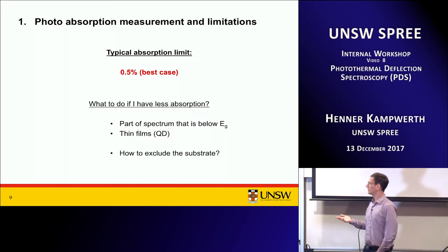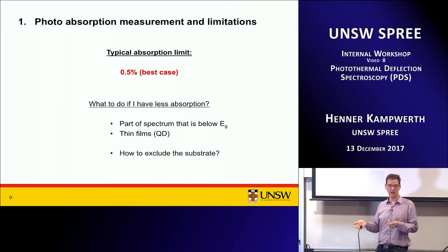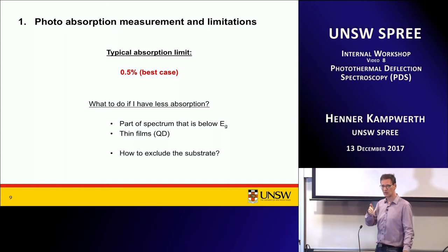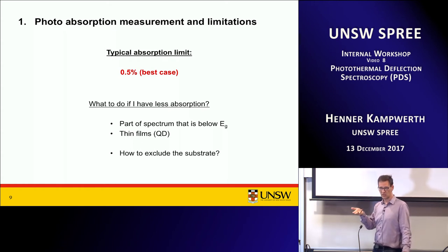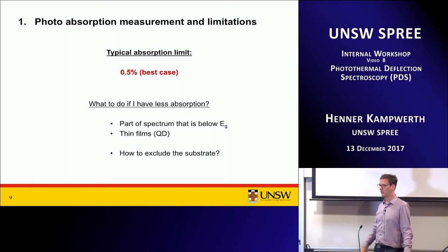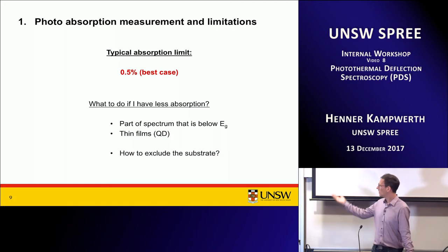This creates the question: what do you do if you have less absorption? For example, if you're interested in spectral ranges below band gap energy — have you ever tried to measure silicon beyond 1300 nanometers? It becomes really, really transparent. Or if you have thin films — for example Gavin's quantum dot materials — where you have very little absorption because the material is very thin. As thinner you get, the less interaction distance with the light and the less is actually absorbed. These are the problems with very weak absorption. And for thin film people, they have thin films on a substrate — for example quartz glass — how do you separate the quartz glass absorption from the thin film?